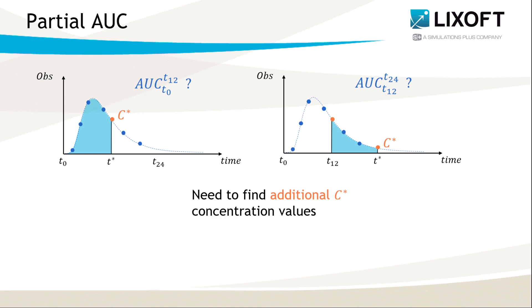Then, it is necessary to add additional points at these requested times. Imputed concentrations are determined via linear or logarithmic interpolation if the requested point is before the last observed time point, or by extrapolation if it is after the last observed time point.